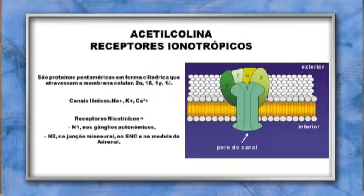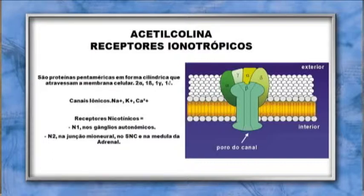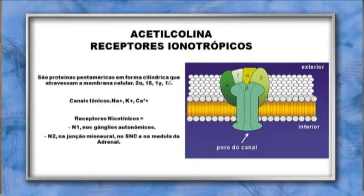A acetilcolina nos receptores nicotínicos — do sistema nervoso simpático, parassimpático e na junção neuromuscular do sistema nervoso somático — caracteriza-se por receptores ionotrópicos. São proteínas pentaméricas em forma cilíndrica que atravessam a membrana celular, compostas por duas subunidades alfa, uma beta, uma gama e uma delta. Quando a acetilcolina se combina com o receptor nas subunidades alfa, o poro do canal funciona como ionóforo, sofre alteração conformacional, despolarizando a membrana e gerando resposta. Os receptores nicotínicos N1 (ionotrópicos) estão nos gânglios autonômicos; os N2, na junção mioneural, no sistema nervoso central e na medula adrenal.